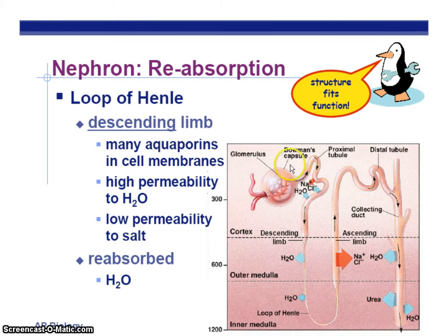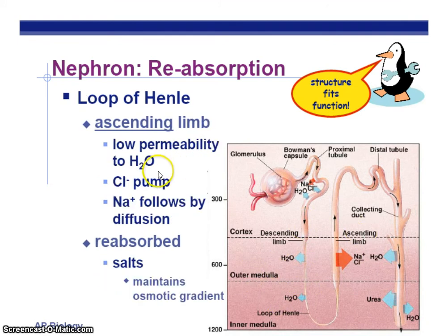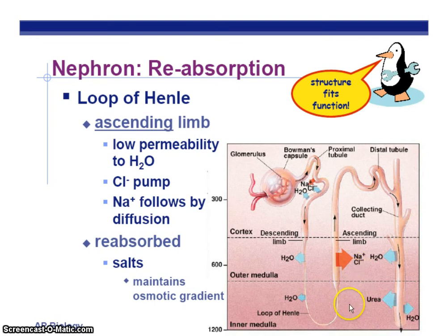So we started with the glomerulus and Bowman's capsule — filtered out some things, left cells and proteins behind. We reabsorbed bicarbonate ion, salt, and water in the proximal tubule. In the descending limb of Henle, just water — the hypertonic medulla allows water to leave easily. The next step is the ascending limb of the loop of Henle. In the ascending limb, we're going to be actively transporting sodium and chlorine into the medulla, which increases the concentration gradient, making it more hypertonic. We also reabsorb some of those salts back into the bloodstream. There is low permeability to water in the ascending loop of Henle, so you'd expect fewer aquaporins there.